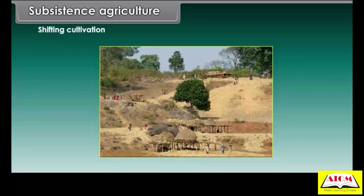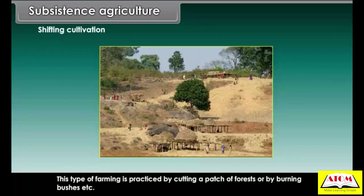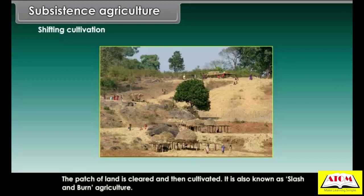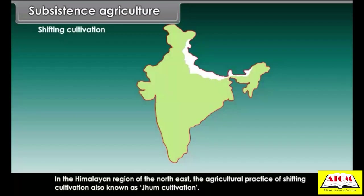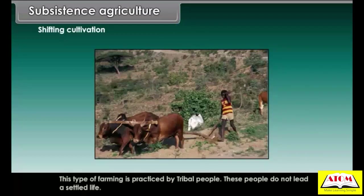Shifting cultivation is practiced by cutting a patch of forest or by burning bushes. The patch of land is cleared and then cultivated. It is also known as slash and burn agriculture. Within India, shifting agriculture or jhum is practiced in the hill tracts of eastern and north-eastern India. In the Himalayan region of the northeast, this agricultural practice is also known as jhum cultivation.